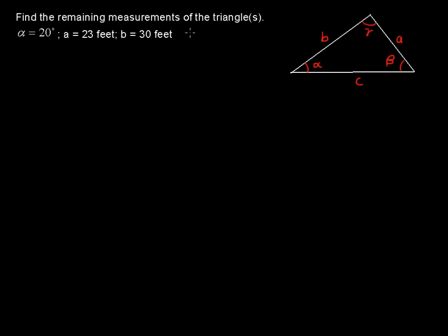Find the remaining measurements of the triangle or triangles when alpha, this angle is 20 degrees, this side length a is 23 feet, and the side length b is 30 feet.